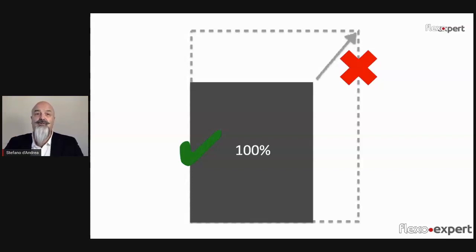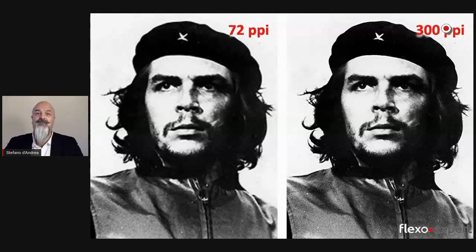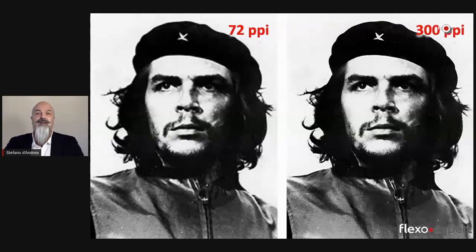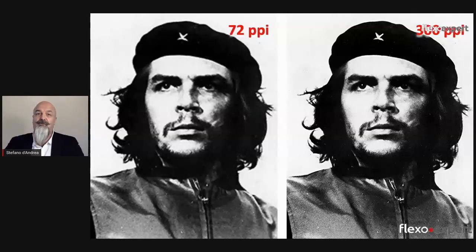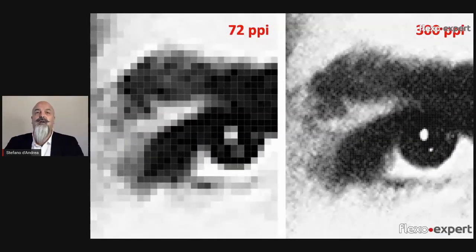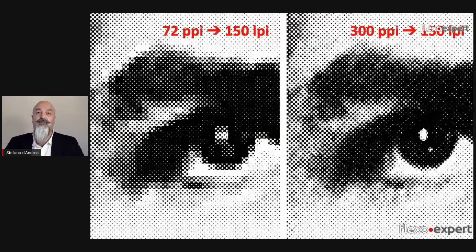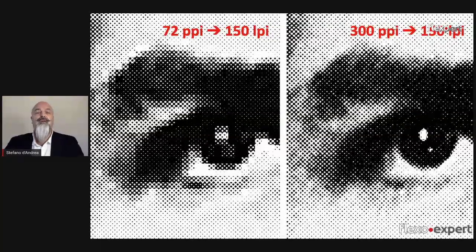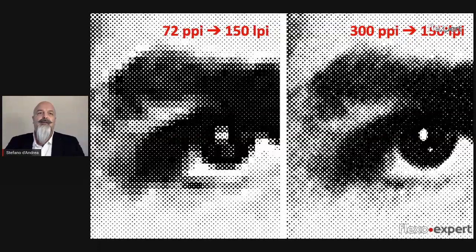When we compare two images at, let's say, 72 and 300 pixels per inch (ppi) on the screen, we might not notice any big difference. But the difference becomes evident when we zoom in after the rasterization and creation of the screening. The dots here at 150 lpi (60 lines per centimeter) show a major difference - the 72 pixels per inch image appears blurred in printing.